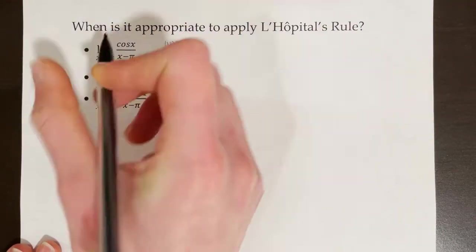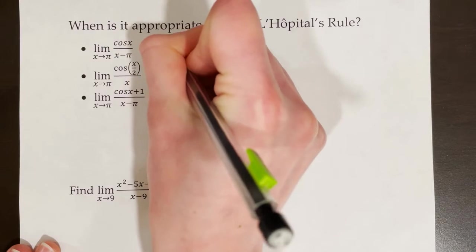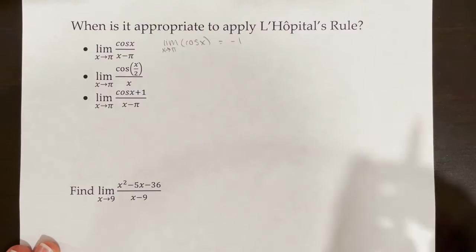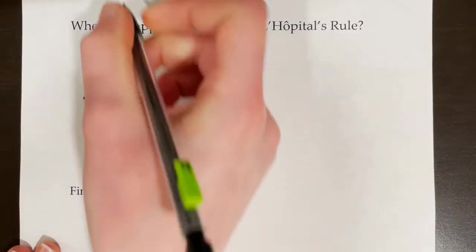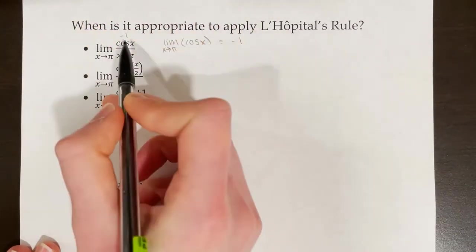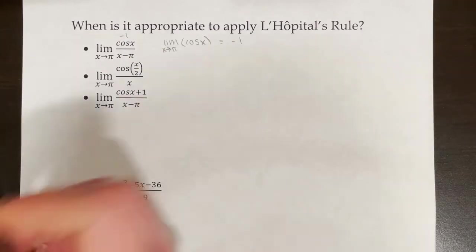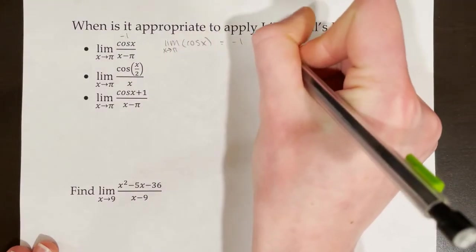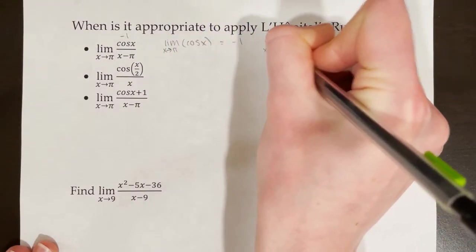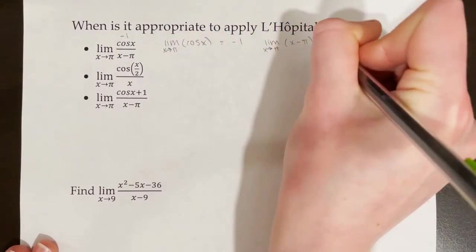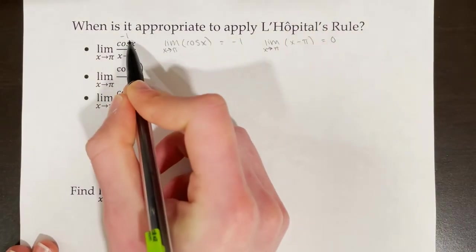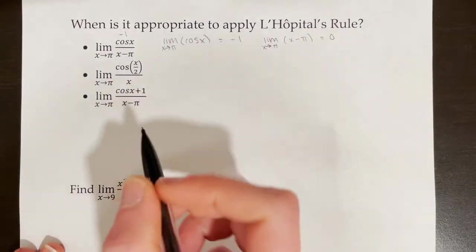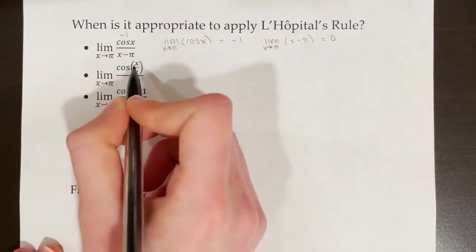I'm going to test the limit of the numerator: the limit as x approaches π of cos(x) equals cos(π), which equals negative 1. So the numerator is negative 1 — this is not going to be a problem where we apply L'Hôpital's rule. Plugging π into the denominator gives negative 1 over 0, which is a different problem and a different method. It's not 0/0.